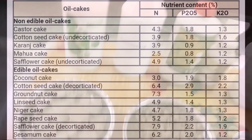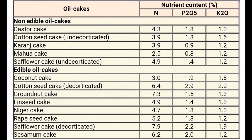Now let us look at the different types of organic manures. Here I am showing a list of oil cakes with their nitrogen, phosphorus, and potassium content. Amongst all, groundnut cake has the highest nitrogen content, and cottonseed decorticated cake has the highest potassium content.